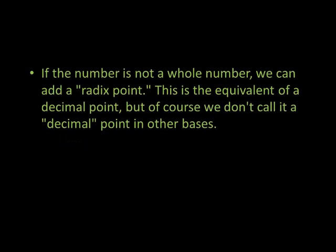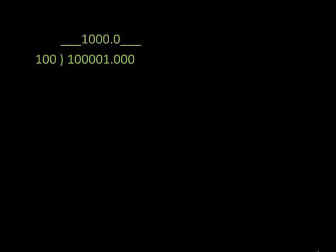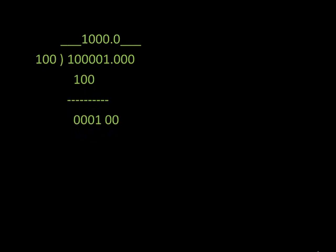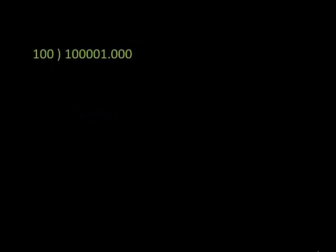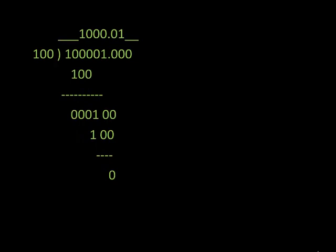The answer can be represented in the quotient-remainder form or in the fractional form. If the number is not a whole number, we can add a radix point — the equivalent of a decimal point, but we don't call it a decimal point in other bases. Here we see an example of the division inclusive of the radix point. We carry out the steps in the same fashion as stated previously.